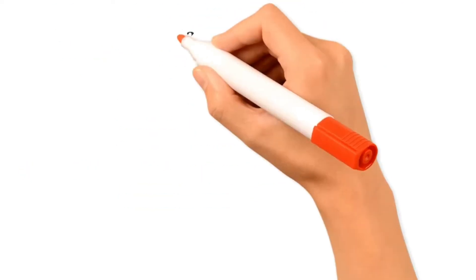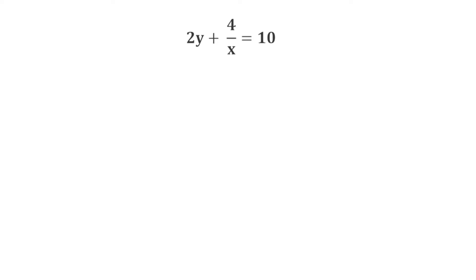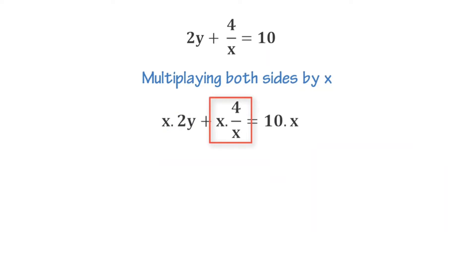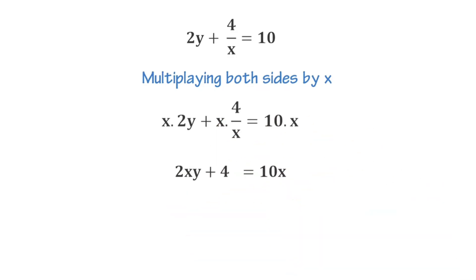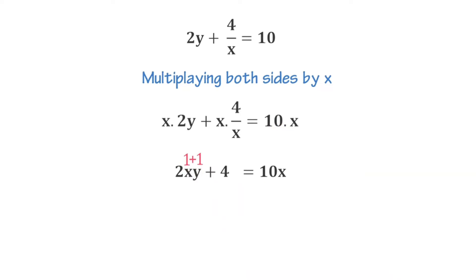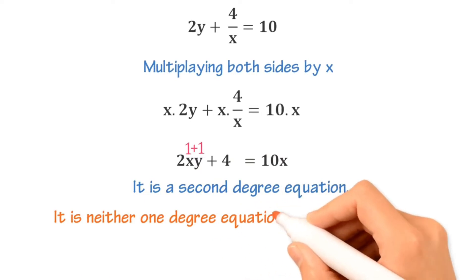Similarly, if I write 2y plus 4 upon x is equal to 10, can you guess the highest power of this equation? To simplify, we multiply both sides by x. The x and x cancel out, giving us 2xy plus 4 is equal to 10x. Now there are three terms. For the first term 2xy, the power of x is 1 and the power of y is 1, so 1 plus 1 equals 2. Hence, the highest power of the first term is 2, making it a second-degree equation — neither a one-degree equation nor a linear equation.